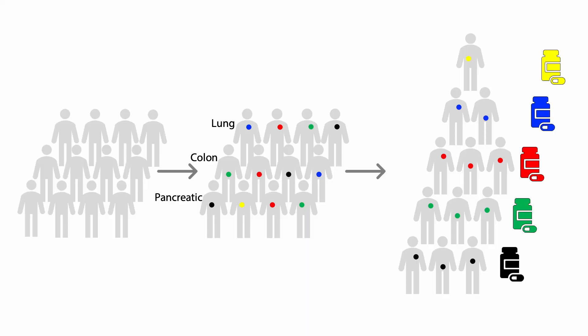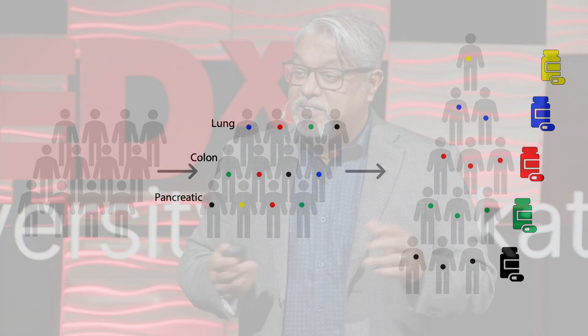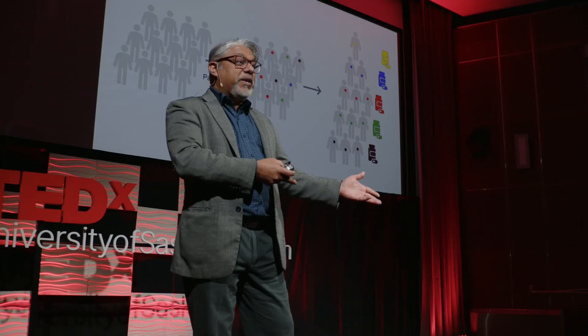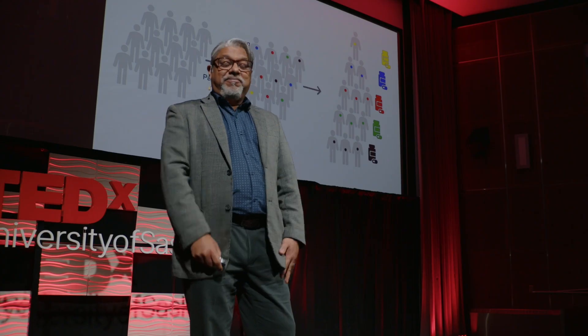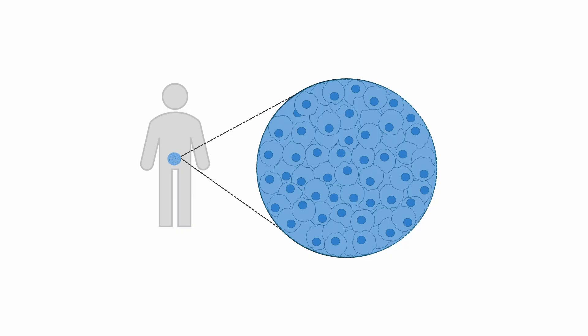Rather than classifying patients based on body parts — like breast cancer patients going to the breast cancer clinic — we now look at the genetic makeup of tumors and tailor treatments accordingly. Personalized medicine. In simple terms, if there is a blue gene mutation, give them the blue medicine; if there is a red gene mutation, give them the red medicine. But patients with the blue gene mutation don't always respond to the blue medicine. Why? This is one of the most pressing questions in cancer therapy.